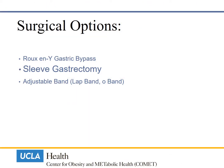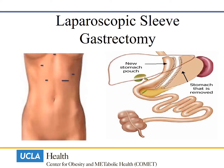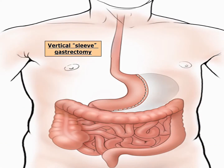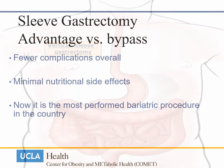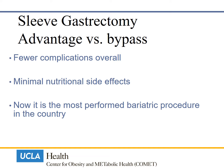Another surgical option is the sleeve gastrectomy. Again, almost all cases are done laparoscopically. During this operation, about 75 to 80 percent of the stomach is removed; at the end of the procedure, the stomach looks like a banana. Many researchers think that the removed part of the stomach may secrete hunger hormones, which might explain why most patients feel dramatically reduced hunger after surgery. The advantages of sleeve gastrectomy versus bypass include fewer complications overall and minimal nutritional side effects, making it the most performed bariatric procedure in the country.